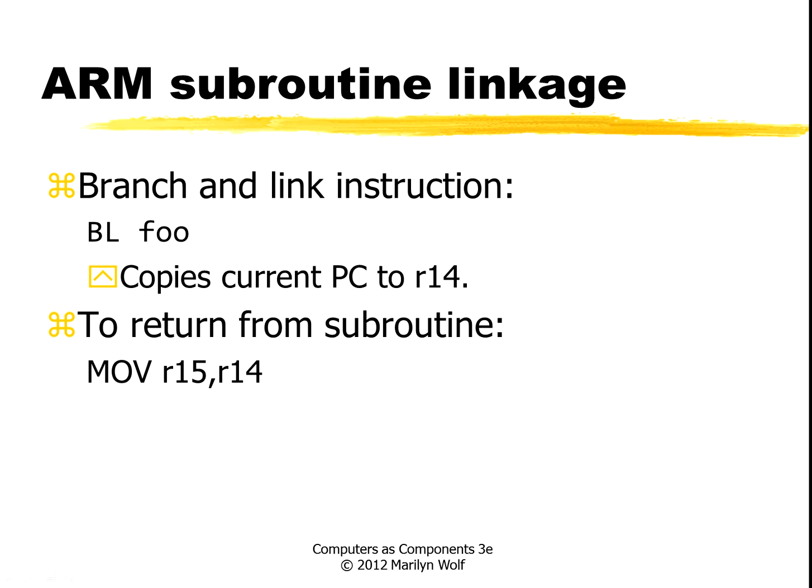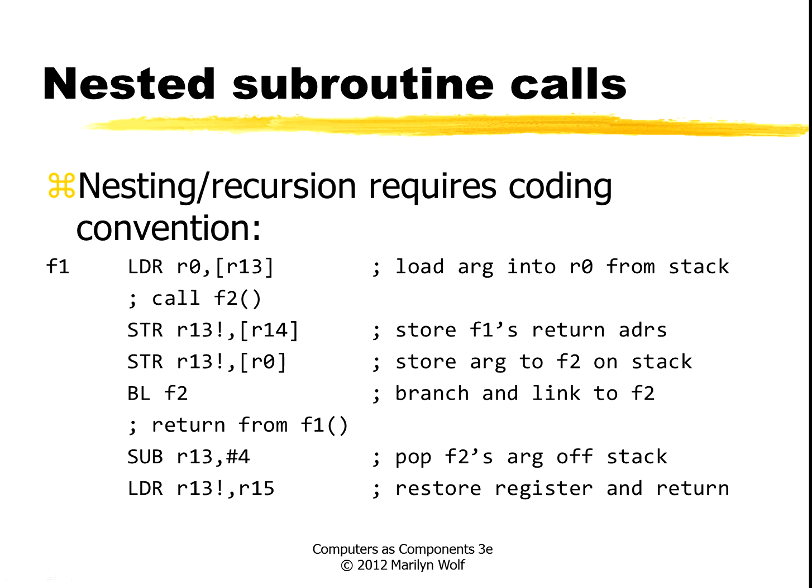Subroutines are accessed using a branch and link instruction, or BL instruction. This copies the program counter, stored in R15, over to R14. To return from the subroutine, we simply move the contents of R14 into R15 — remember the first register in this list is the destination register. If we want to do nested subroutine calls, then we need to use a stack, which we can do.